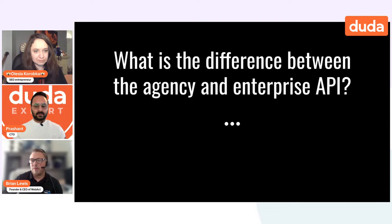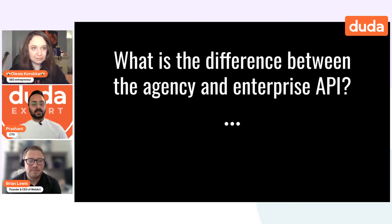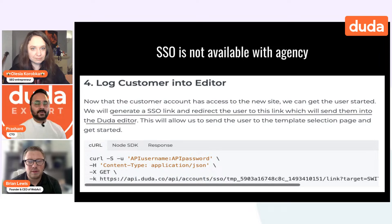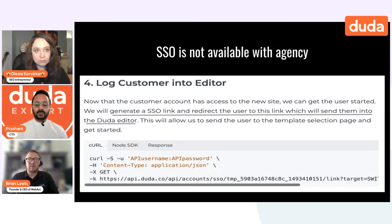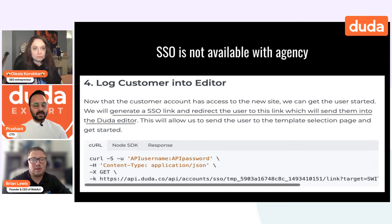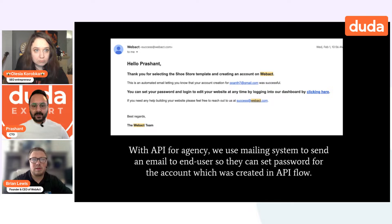What's the difference? If you're paying more for enterprise versus less for the agency plan, what differences do you get in the API? The first thing is SSO — single sign-on. As you saw earlier, when Brian entered the client's information and hit submit, it redirected them directly into the dashboard. That functionality is not available with the agency API, which kind of breaks the flow of wanting the client to get into the editor. So what's the solution?